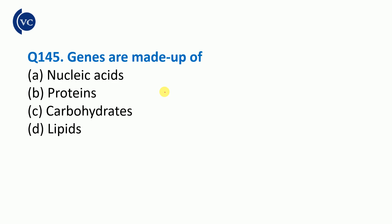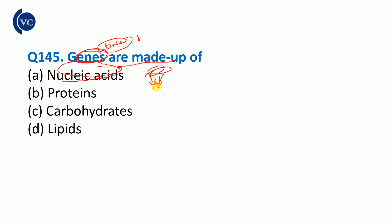Next question: genes are made up of what? Genes are made up of DNA. It is said that it has a hereditary effect. Genes are also used to be genetically mixed — they are made of DNA.